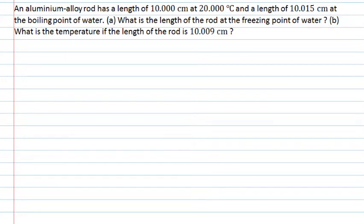In this question, an aluminium alloy rod has a length of 10 centimetres at 20 degrees Celsius and a length of 10.015 centimetres at the boiling point of water. From this information, we're asked to ascertain what is the length of the rod at the freezing point of water at zero degrees Celsius, and also what is the temperature if the length of the rod is 10.009 centimetres. This is ultimately a question about expansion.